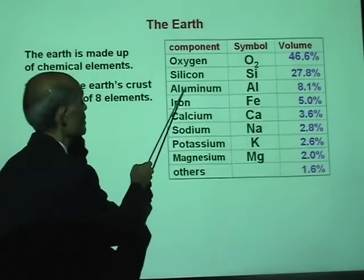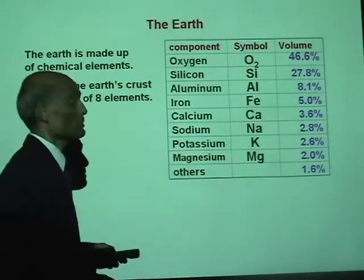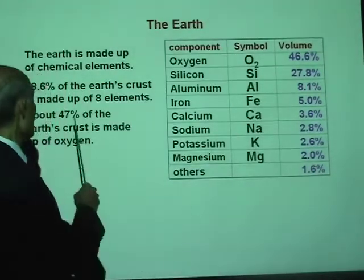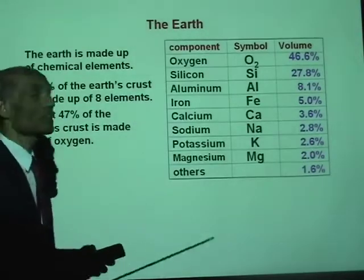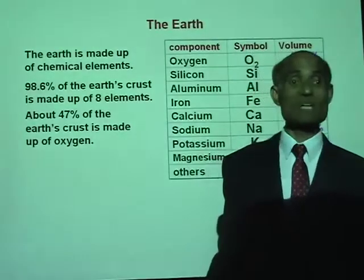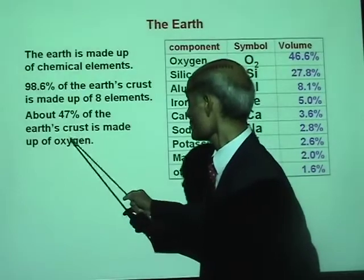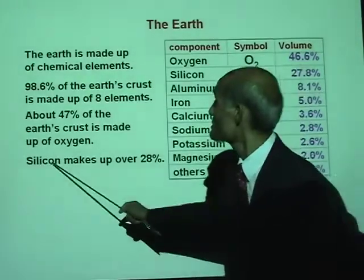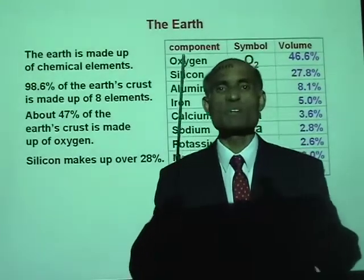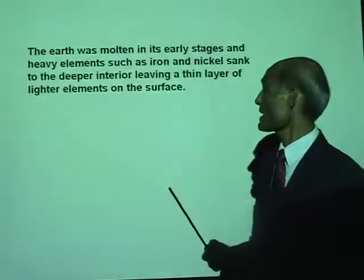Oxygen, silicon, aluminum, iron, calcium, sodium, potassium, and magnesium. About 47% of the Earth's crust is made up of oxygen, and about 28% is silicon. That means silicon and oxygen make up the major part of the Earth's crust.